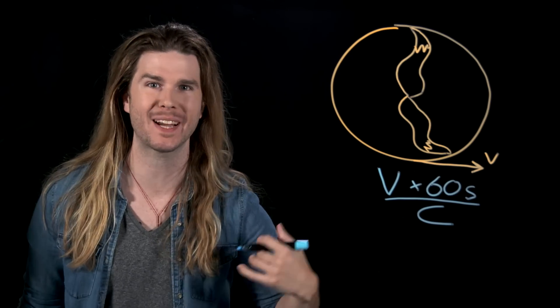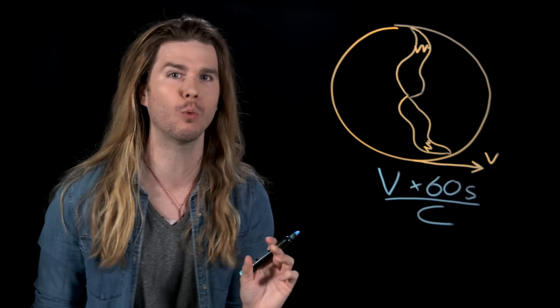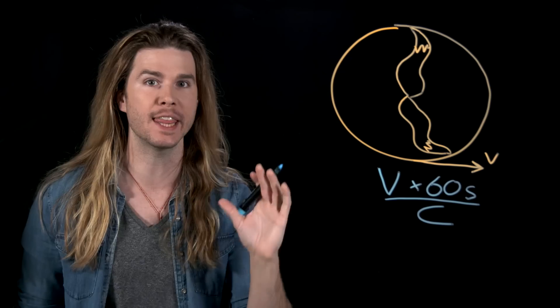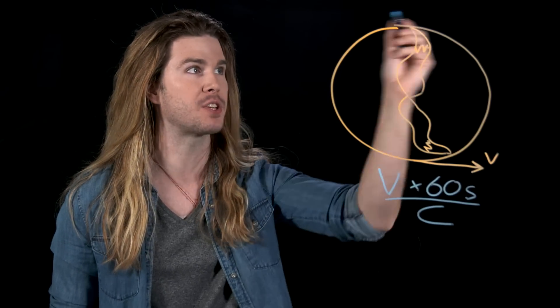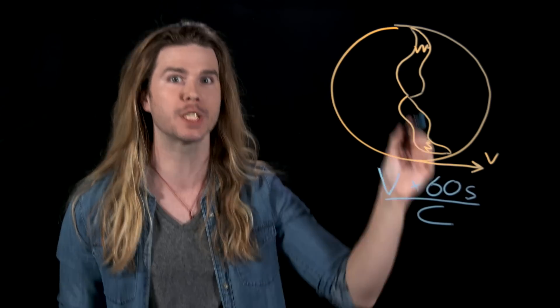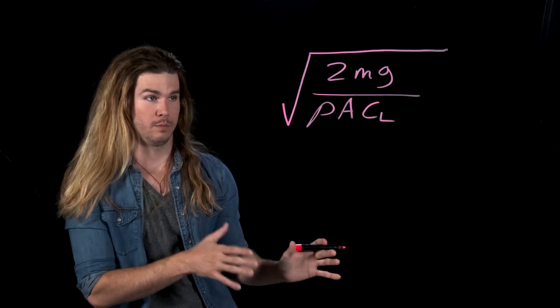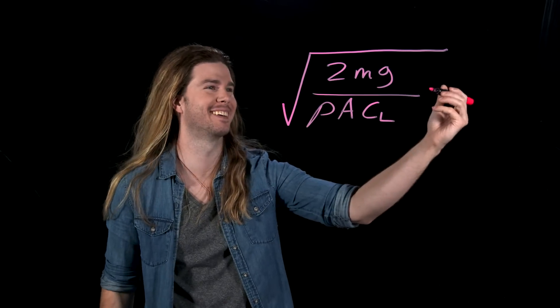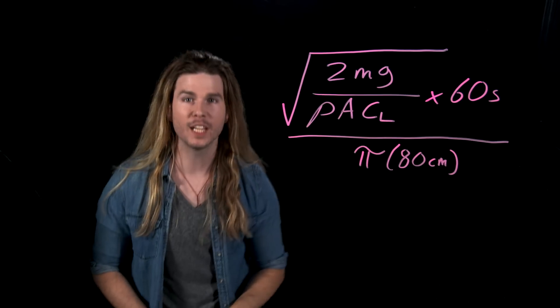To get a better idea of what's going on, let's also solve for revolutions per minute, or RPM. To get RPM, we take the velocity of Tails' tail, multiply it by 60 seconds to see how much distance that tail will cover around the circle in one minute, and then divide that value by the circumference of the circle. That tells us how many revolutions that distance makes in just 60 seconds. Now we can finish the equation.